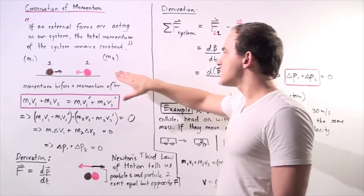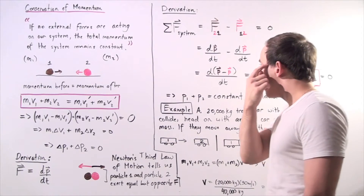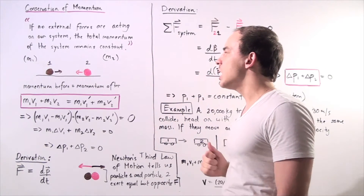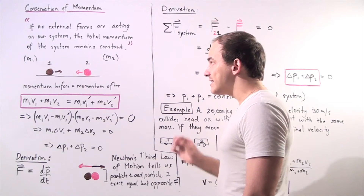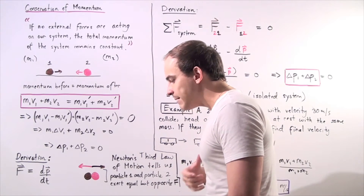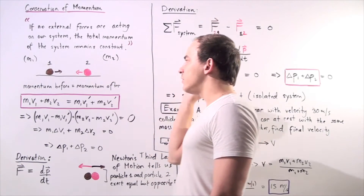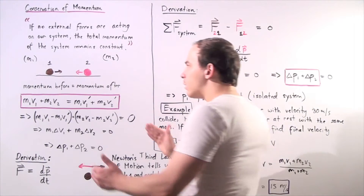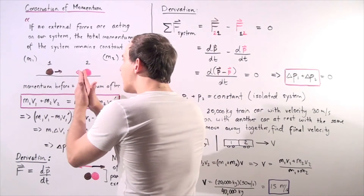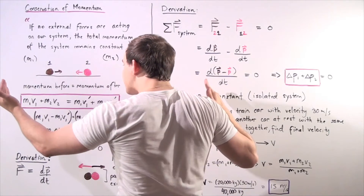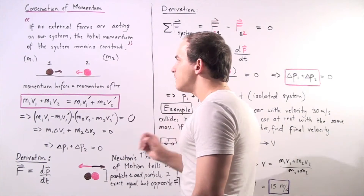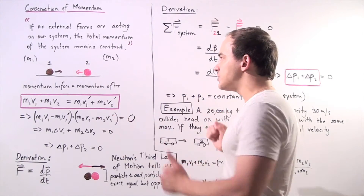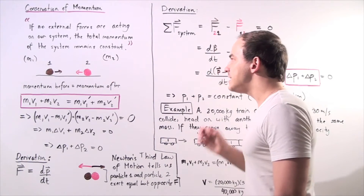Let's see exactly what that means by looking at the following example. Suppose we have particle one with mass m1 traveling in the positive direction along the x-axis with initial velocity v1. At the same time, a second particle with mass m2 is traveling in the negative direction along the x-axis with initial velocity v2. Eventually these two particles will collide and bounce back in opposite directions. The final velocity of object one is v1 prime, and the final velocity of object two is v2 prime.